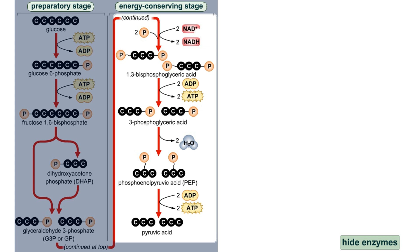During the energy conserving stage, the two three-carbon sugars are oxidized over several steps to two molecules of pyruvic acid. Through these reactions, two molecules of NAD+ are reduced to NADH, and four molecules of ATP are produced. Since phosphate groups are transferred directly from the metabolic products to ADP, this ATP generation is called substrate-level phosphorylation. In contrast, in a process called oxidative phosphorylation, aerobic organisms use a proton gradient to drive the phosphorylation of ADP to ATP using free inorganic phosphate molecules.